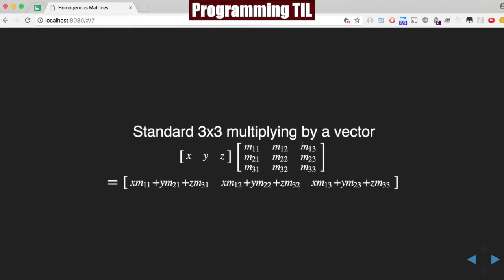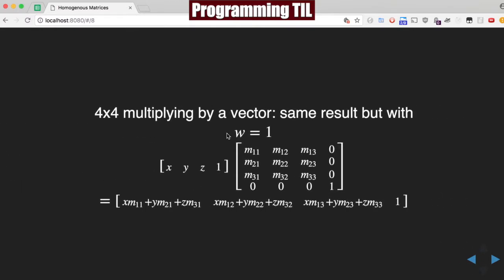And a standard 3 by 3 multiplying by a vector, you'd have the XYZ, you're going to have this nice little simple equation right here. And if we translate that into 4 by 4 with W equals 1, you'll have the exact same values, but this extra value at the end with 1 still.